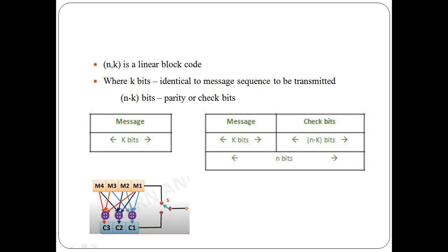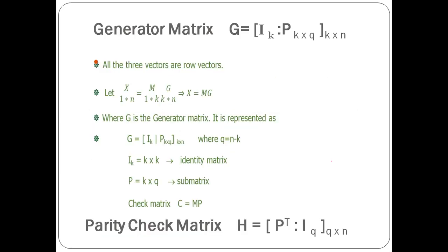Continuing the example: XOR of m1, m2, m4 gives c2. The check bits are derived from the message bits themselves, which is why this is called an encoder. At each step, we write the message bits first, then calculate the check bits in parallel. After the switch turns over, we generate and append the check bits. Message bits and check bits together form the complete linear block code.